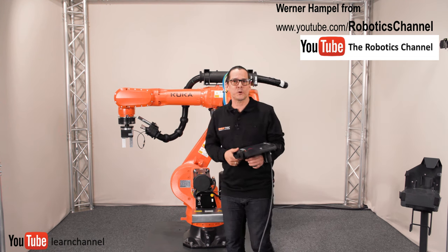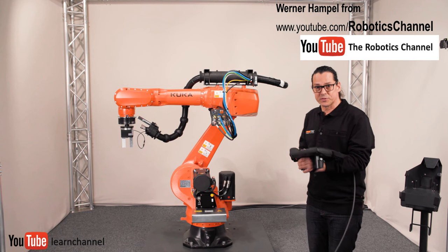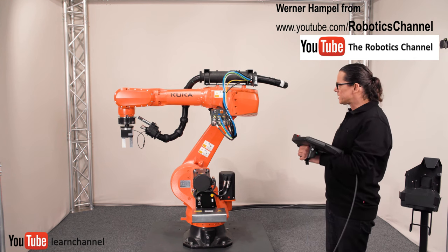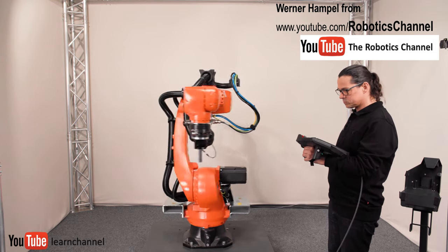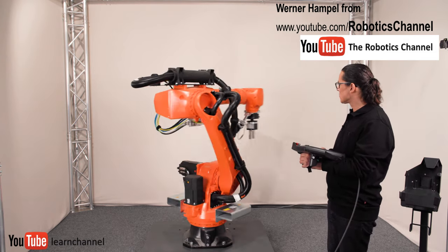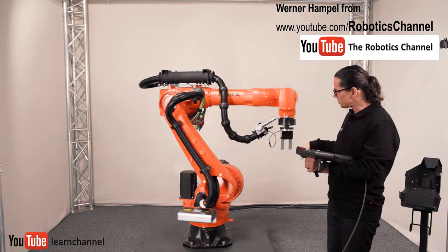And let's have a look at how the robot works, how it moves. This is axis 1. You see it's rotatory.